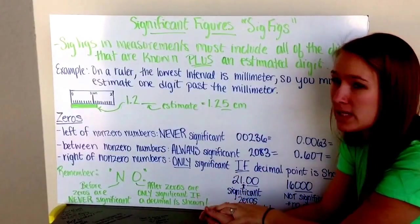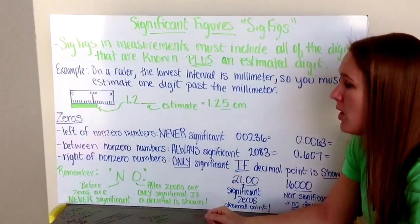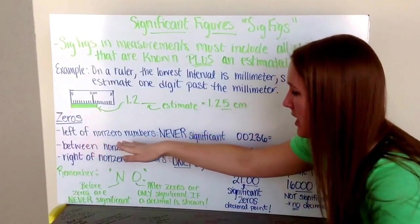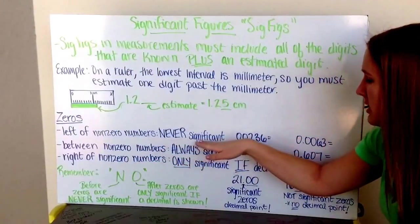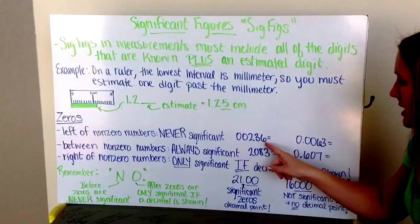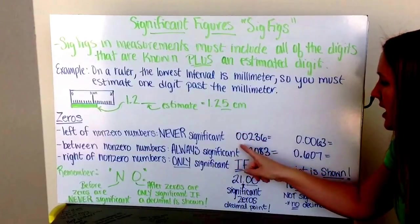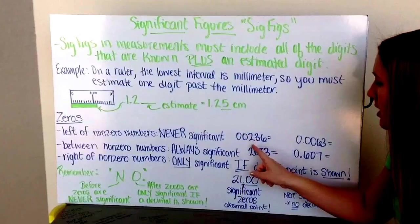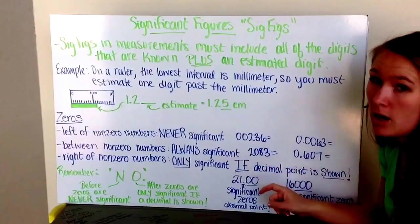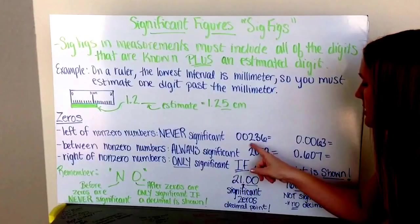Zeros is where it gets a little tricky. There's three different types of zeros. We can have zeros to the left of non-zero numbers. These zeros are never significant. Examples of this is 0.236. These zeros in front do not count as significant figures, but my 2, 3, and 6 are significant figures because they mean something. So here I have three significant figures.